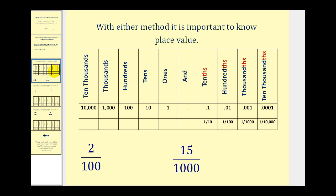With either method it's important to know place value. So if we have the decimal point here in the middle, to the right we would have the tenths, hundredths, thousandths, and ten-thousandths. And to the left of the decimal point we'd have the ones, tens, hundreds, and so on. So the idea is if we have fractions where the denominator is a power of ten, we should be able to write this in decimal form if we know our place values.